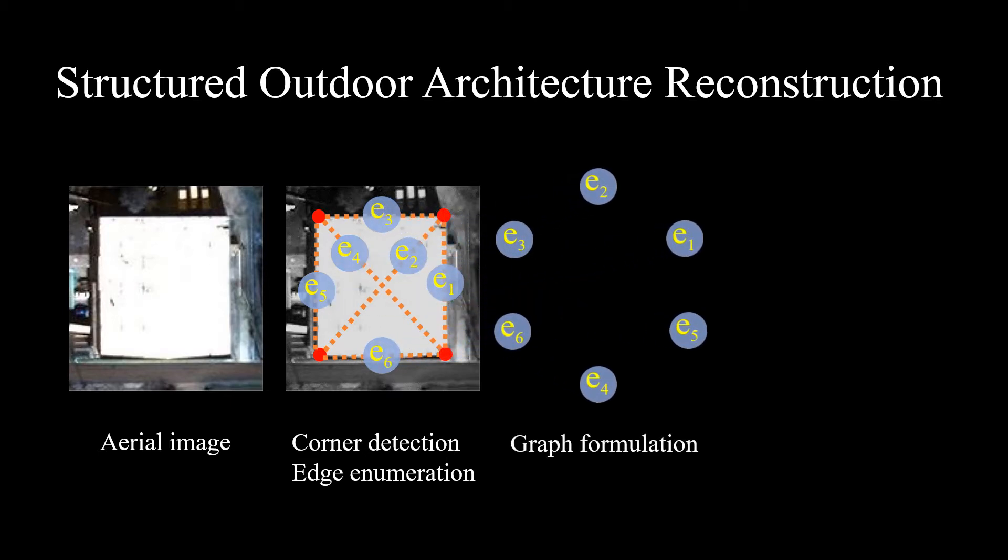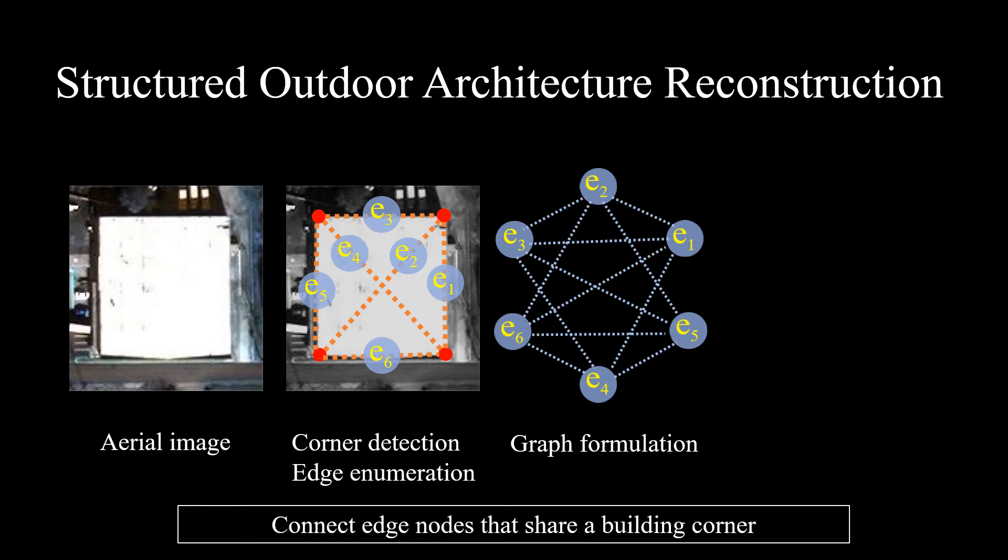We formulate a relational graph by turning an edge candidate to a node and adding a connection between edges sharing a corner.